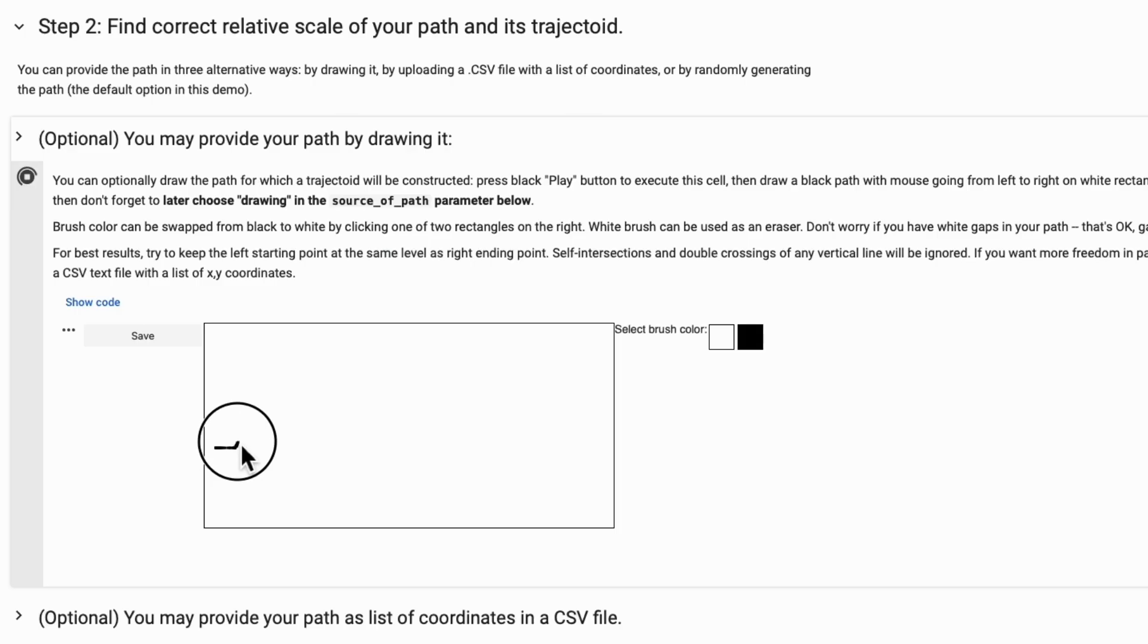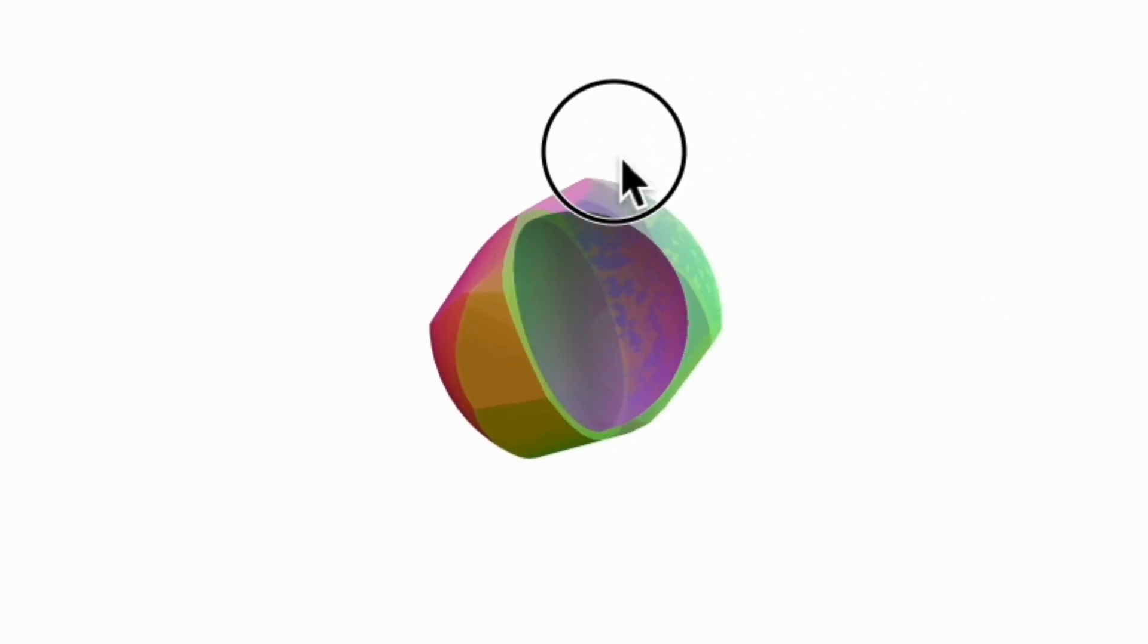Now let's make some. To make a trajectoid, you just draw a path in the software and it generates the shape. Then you 3D print them.